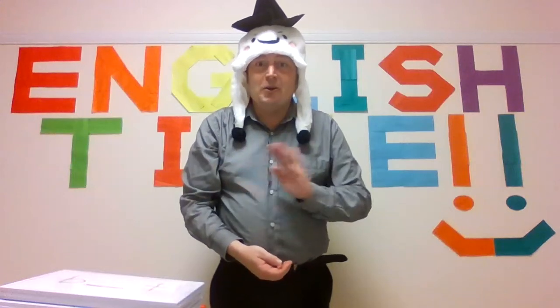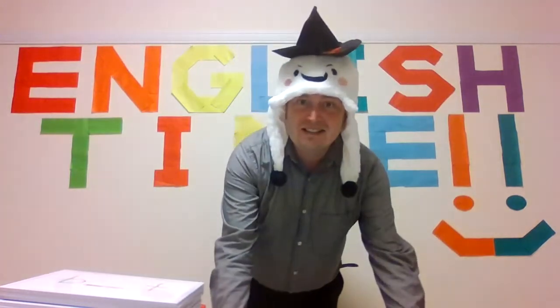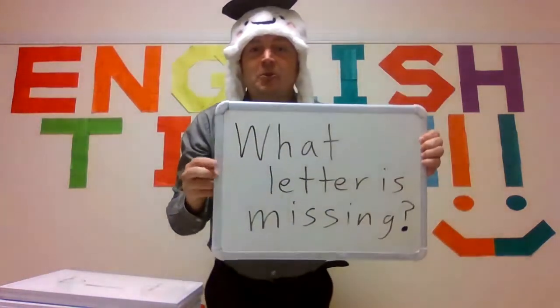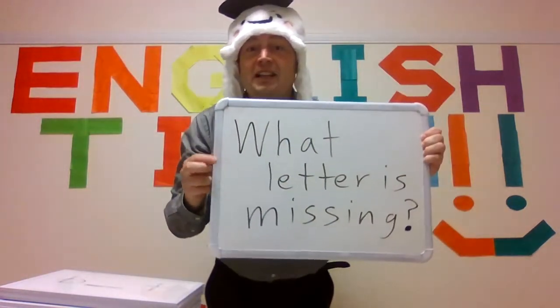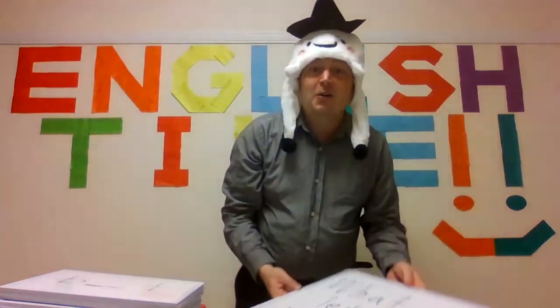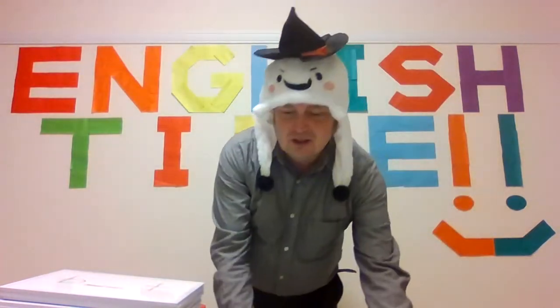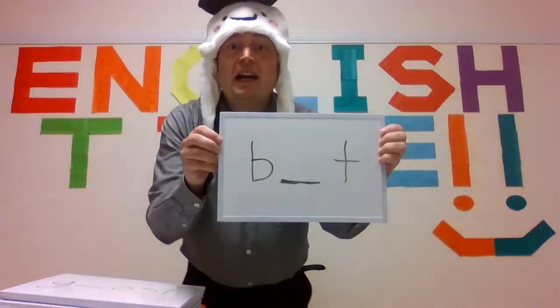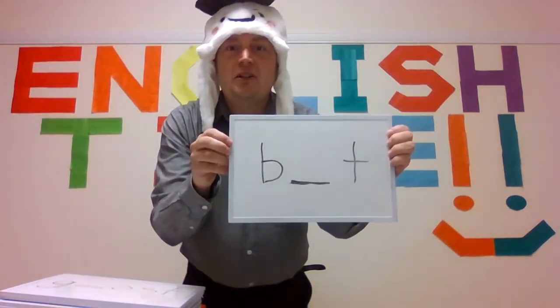Hello everyone and welcome to English time. Today is a Halloween lesson and we're going to do 'what letter is missing' with Halloween words. The first word is bat — what letter is missing? Five seconds: five, four, three, two, one.